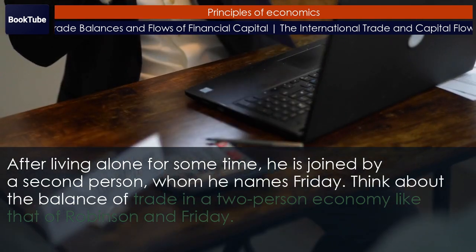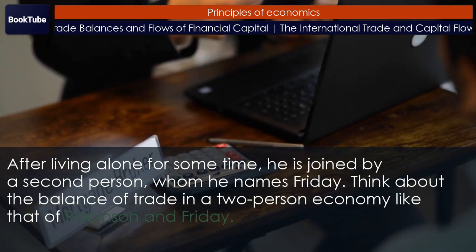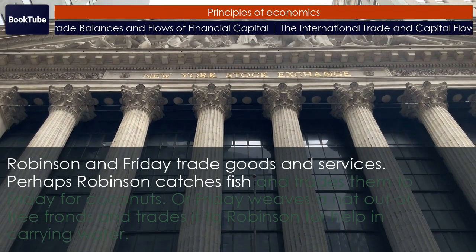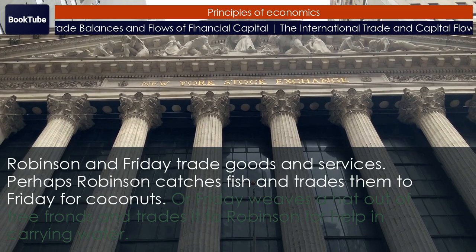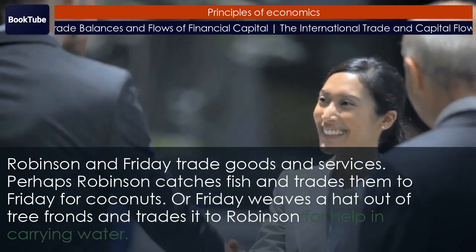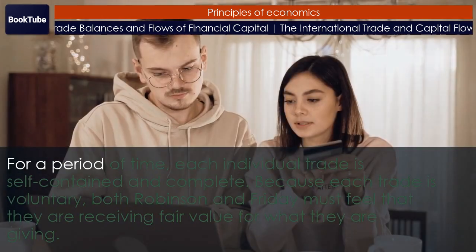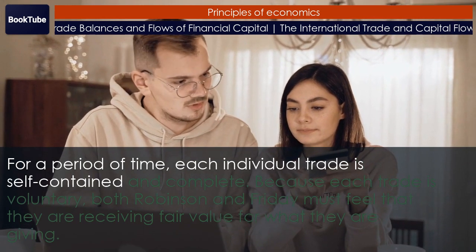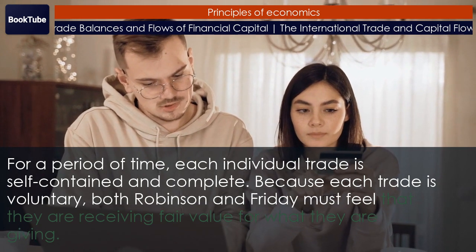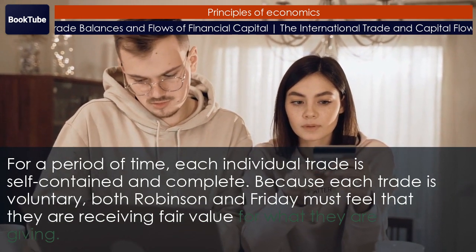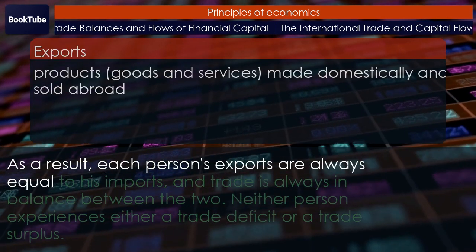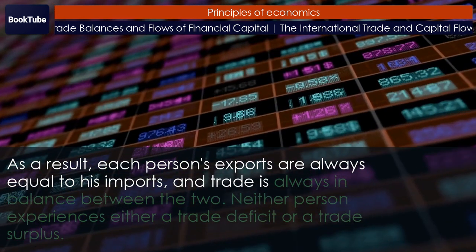Think about the balance of trade in a two-person economy like that of Robinson and Friday. Perhaps Robinson catches fish and trades them to Friday for coconuts, or Friday weaves a hat out of tree fronds and trades it to Robinson for help in carrying water. For a period of time, each individual trade is self-contained and complete. Because each trade is voluntary, both Robinson and Friday must feel that they are receiving fair value for what they are giving. As a result, each person's exports are always equal to his imports, and trade is always in balance between the two.